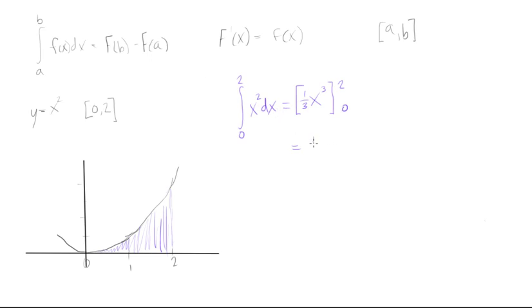What would be 1 third times 2 cubed, minus 1 third times 0 cubed. So we'll get, let's just quickly work this through, we'll just get this is equal to 0 minus 0, and this will be equal to 2 cubed is 8, 8 thirds minus 0 is equal to 8 thirds. So there we go.